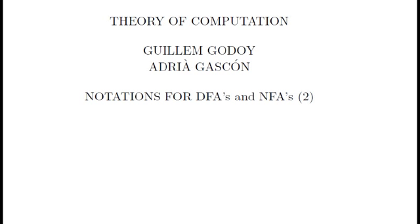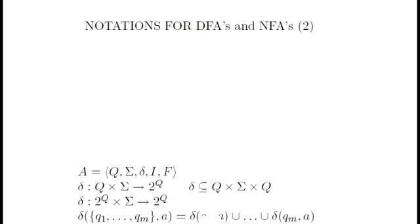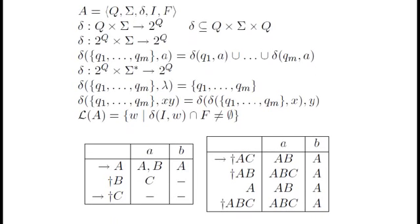We keep on seeing notations for non-deterministic finite automaton representation. The representation of a non-deterministic finite automaton by means of a tuple differs from the one for a deterministic finite automaton, since in the first case we can have a set of initial states.